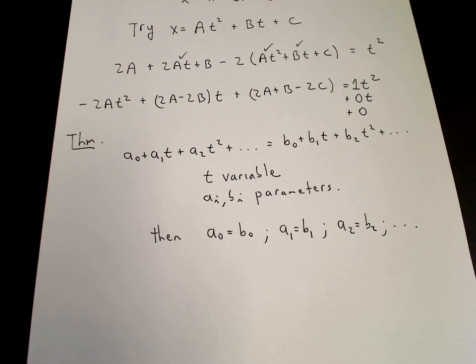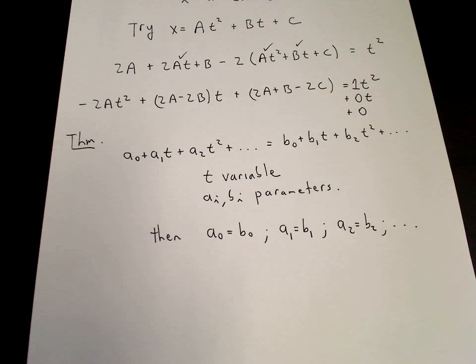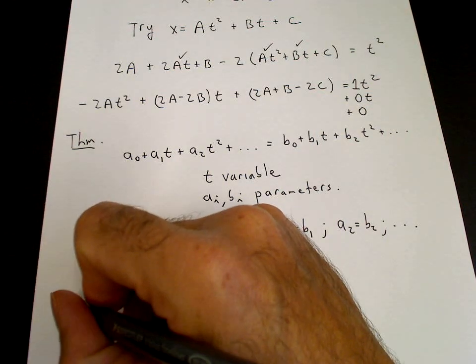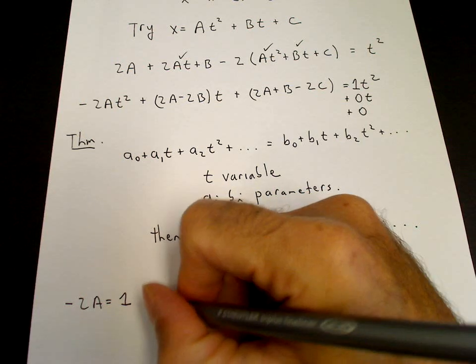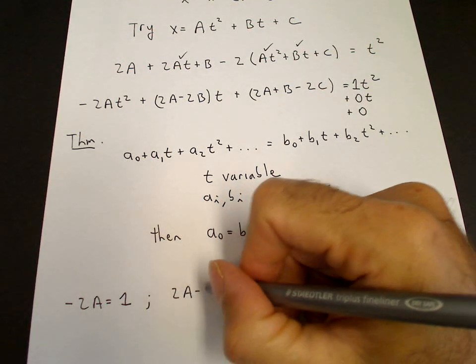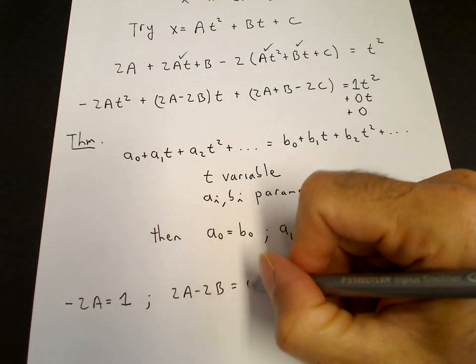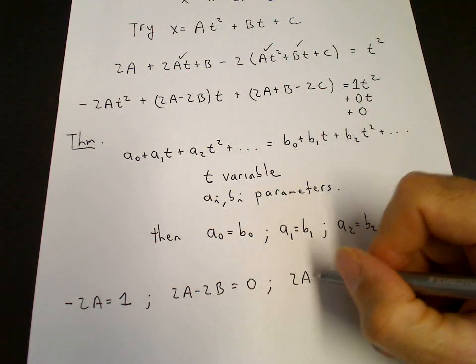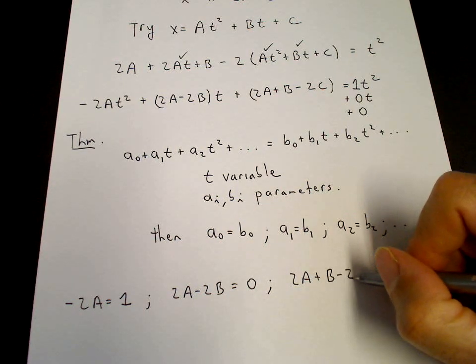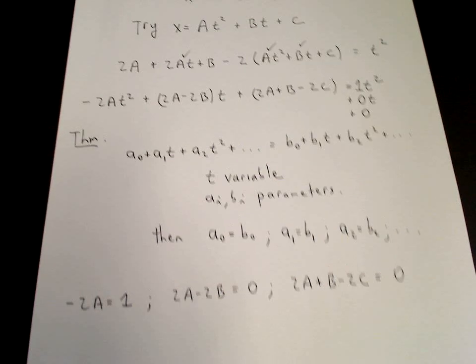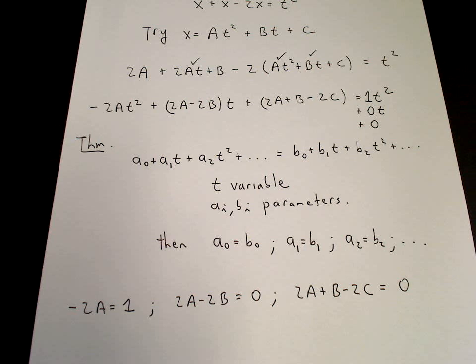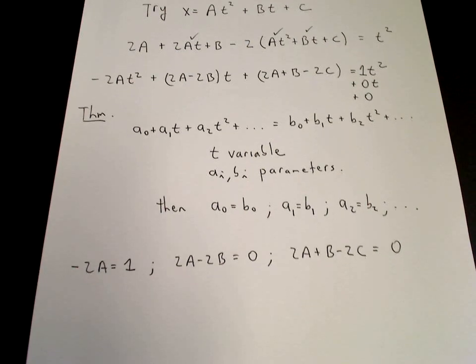So you don't need to write that, but you see that it's there. So that gives us our system: minus 2A has to be 1, 2A minus 2B has to be 0, and 2A plus B minus 2C has to be 0. And that is our three equations and three unknowns, which we can solve.